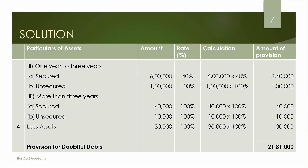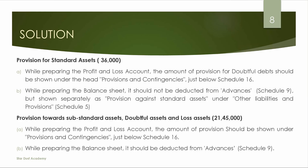Now for the treatment in final accounts. While preparing the Profit and Loss Account, the amount of provision for doubtful debts should be shown under the head 'Provisions and Contingencies.' This applies in all cases — provision for doubtful debts goes under Provisions and Contingencies in the P&L account.